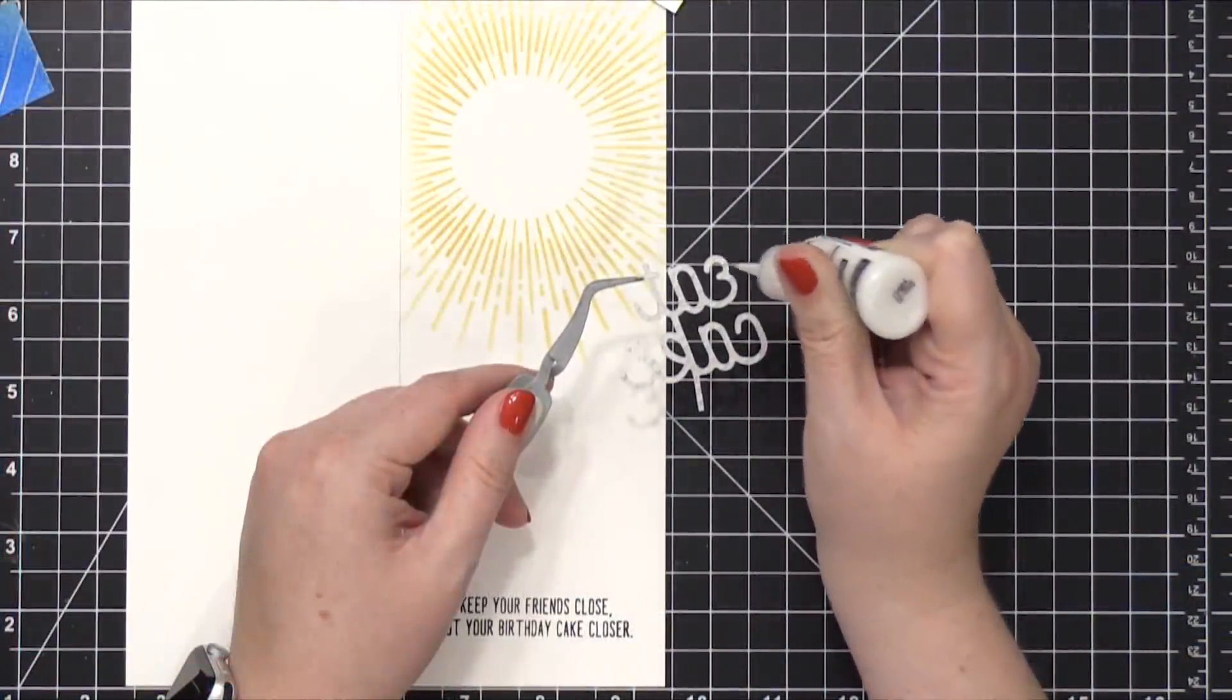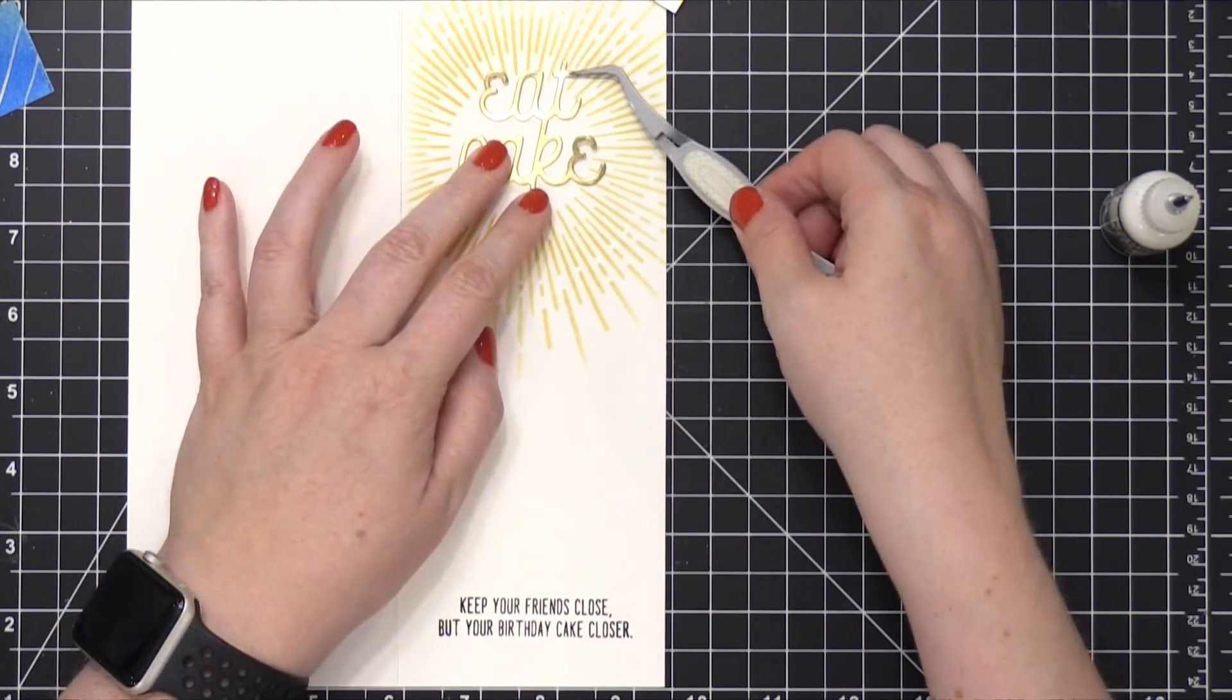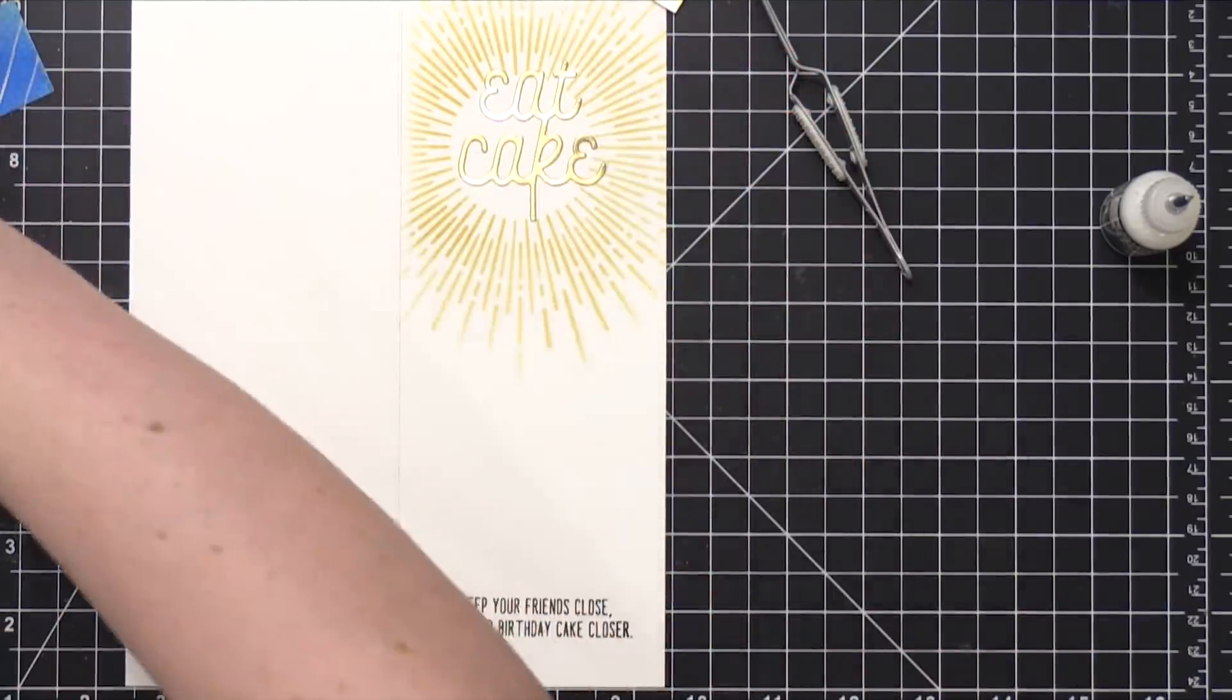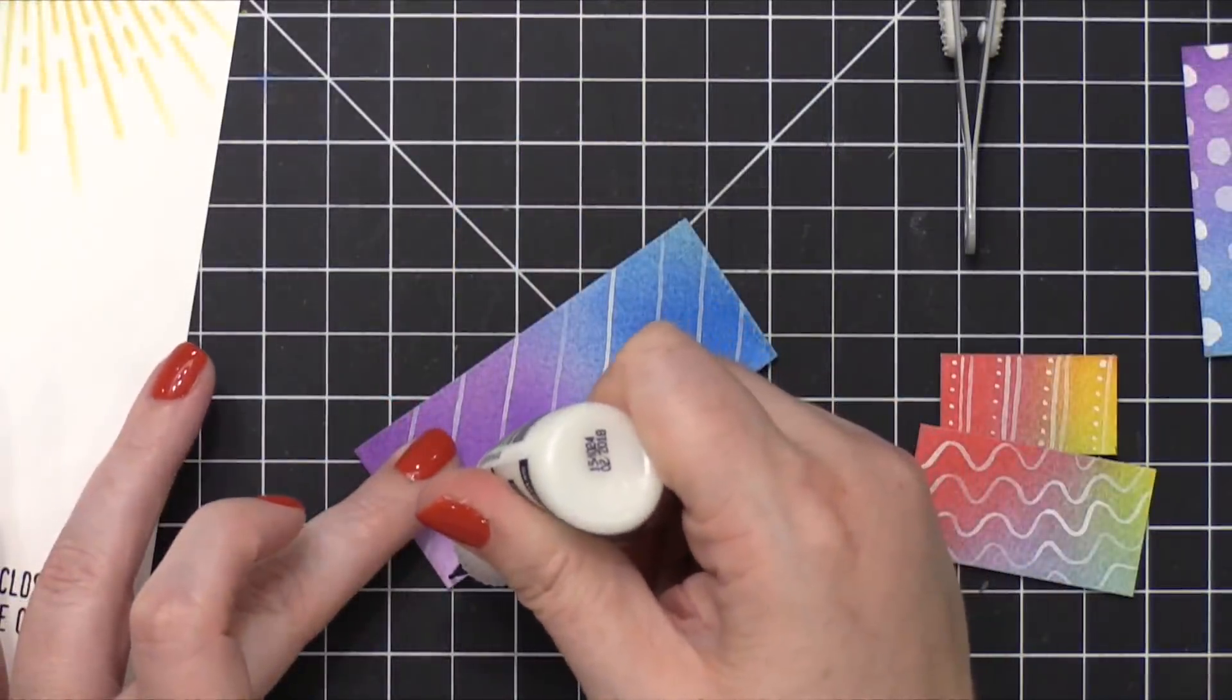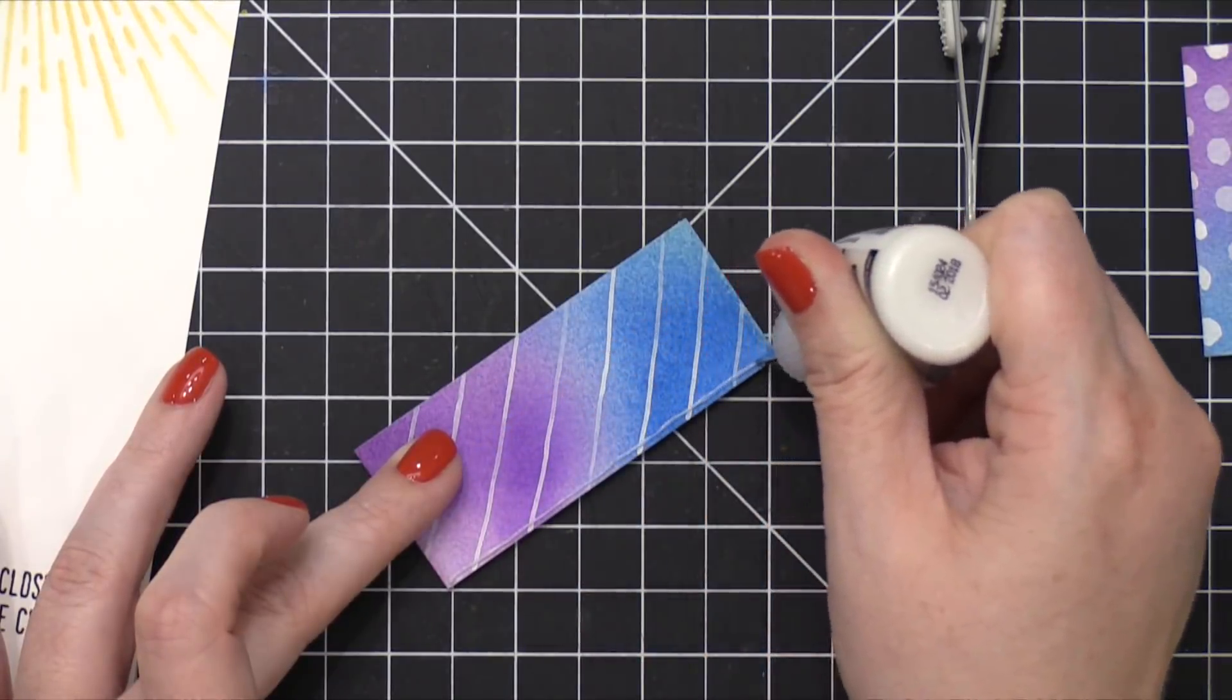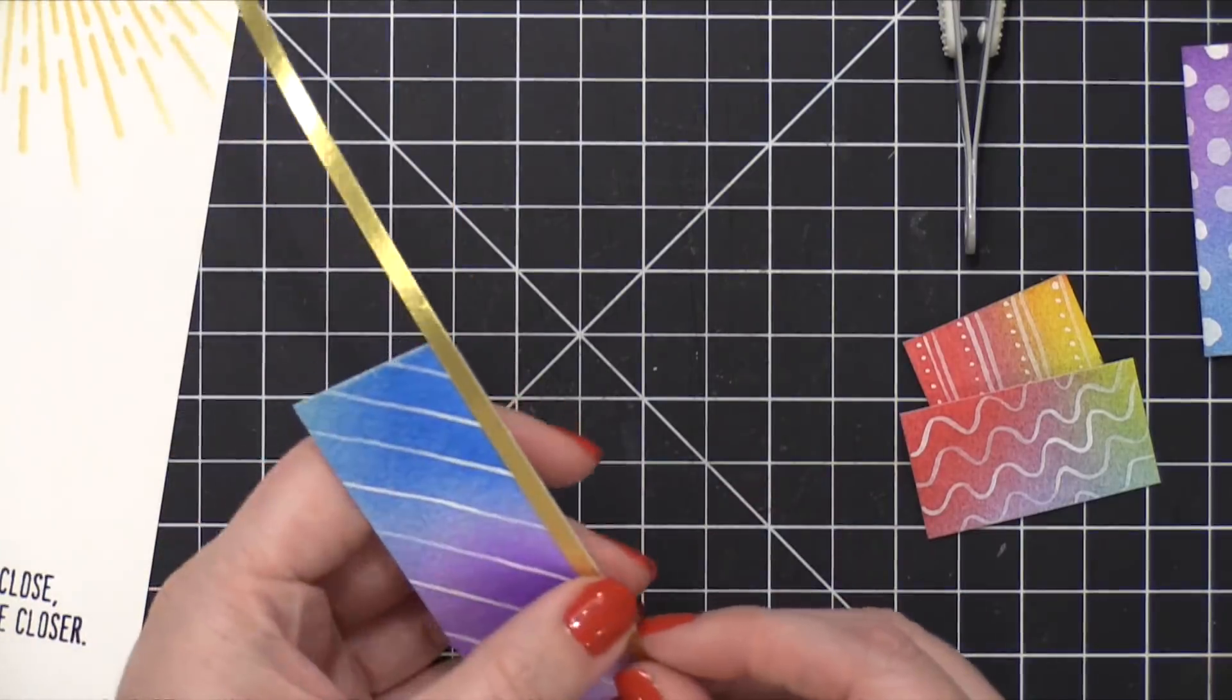I think it's just kind of fun and sassy. I'm using some Ranger multi-medium matte adhesive to adhere that cake at the very top. And then I'm going to prepare the different layers of my birthday cake. I'm putting a very thin line of adhesive using that same Ranger multi-matte adhesive, and then I put the gold foil strip on top.